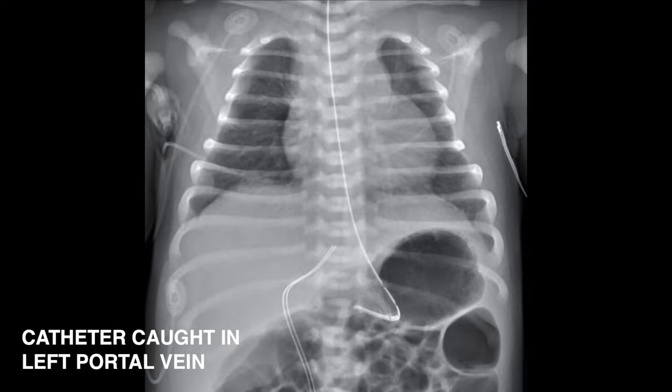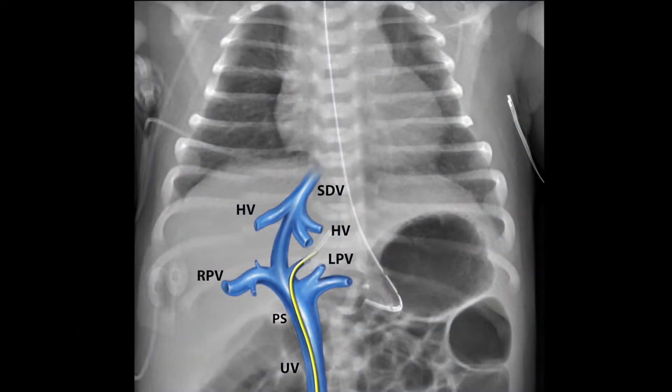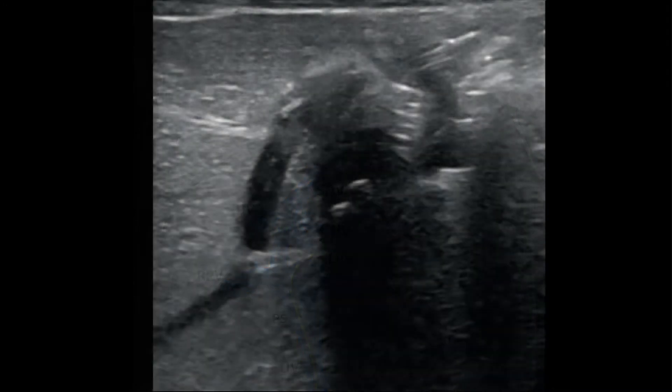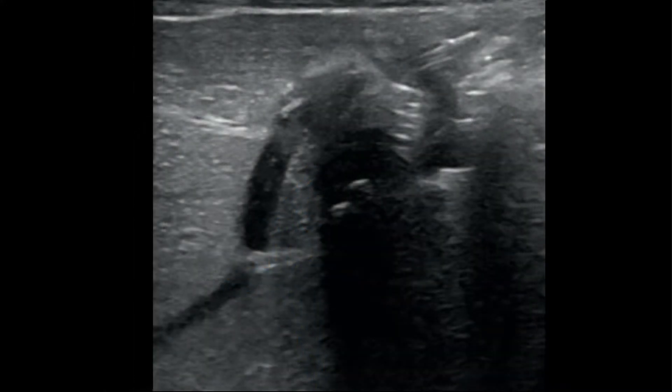Here is a radiograph of a UVC malpositioned in the left portal vein. The overlaid illustration highlights the anatomy. Portal veins may be distinguished by their echobrite endothelium.